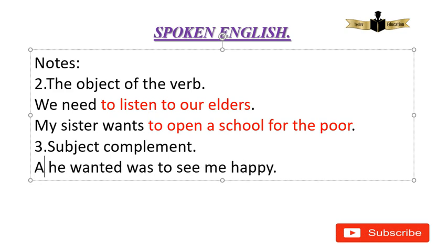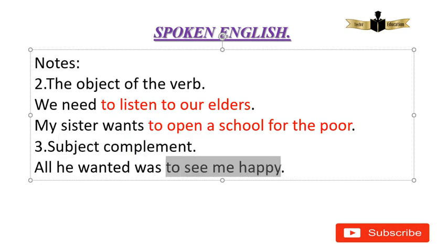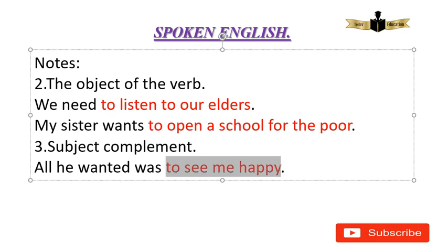Example: 'All he wanted was to see me happy.' In this sentence, 'to see me happy' is the subject complement. 'To see' is the infinitive verb, and 'me happy' modifies it. This is the subject complement detail, which we will explain further in the next class. If you have any doubts, you will know. Bye friends.